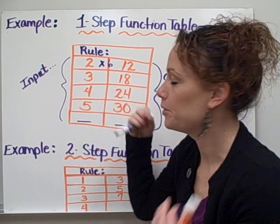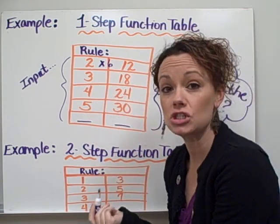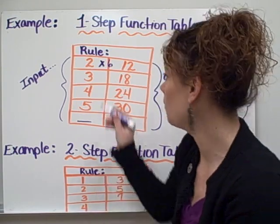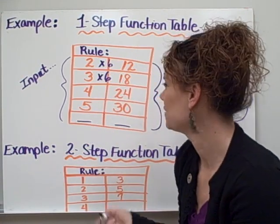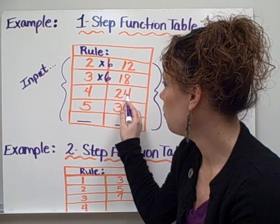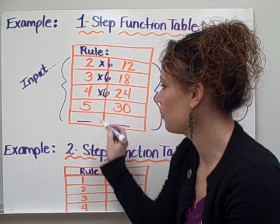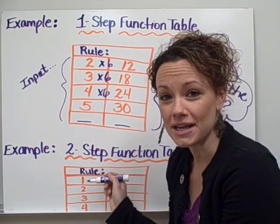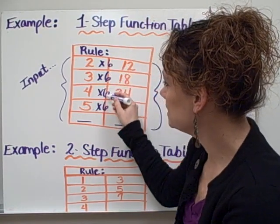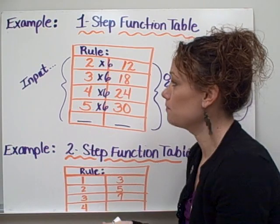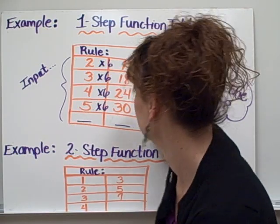Three is the number that I put into my machine. It's my input. And it popped out an eighteen. So what do you have to do to three to make it eighteen? Well we also have to multiply by six. So now I'm seeing sort of a pattern to start. Let's look at our next one. To get from four to twenty-four we also have to multiply by six. And the same thing for our next number. To get from five to thirty we also multiply by six. So now it is clear to see that the rule for this particular function table is multiply by six or times six.